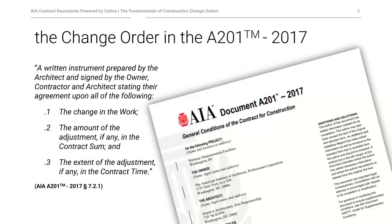This webinar focuses on the change order, which is defined in Section 7.2 of the A201 as follows: a change order is a written instrument prepared by the architect and signed by the owner, contractor, and architect stating their agreement upon all of the following — the change in the work, the amount of the adjustment, if any, in the contract sum, and the extent of the adjustment, if any, in the contract time. Sal will now discuss the causes and impacts of change orders on the project.